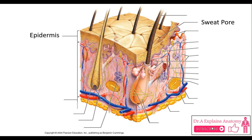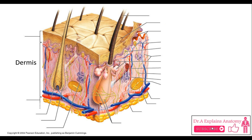In the dermis, we can see this is a sweat pore. This is a hair shaft. Moving to the dermis, this is the dermal papilla.